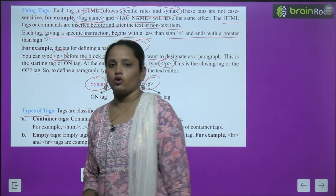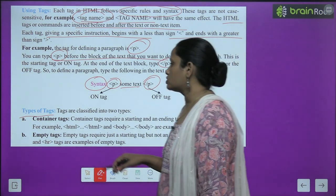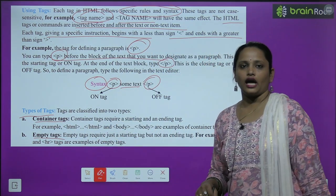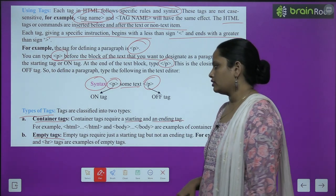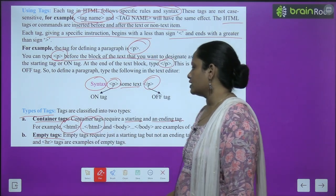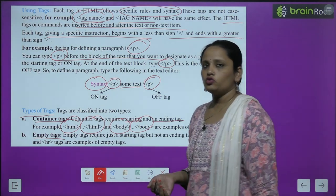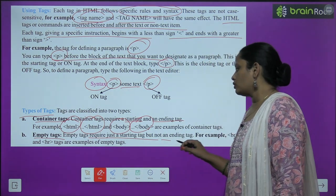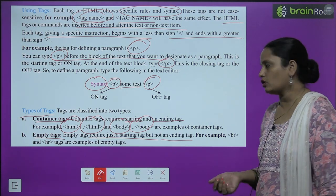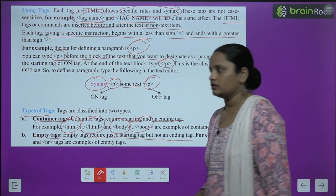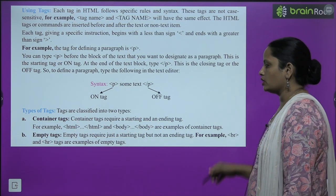Tags are classified into two types. First is the container tag — this requires both a starting and an ending tag. For example, the HTML, head, body tags all have opening and closing tags. Second is the empty tag — this has only a starting tag but no ending tag. For example, BR and HR are empty tags that do not need separate opening and closing tags.